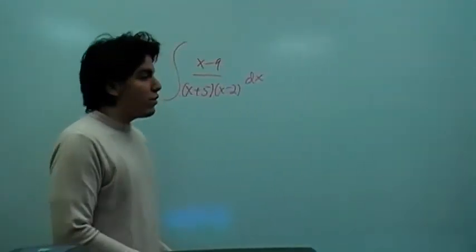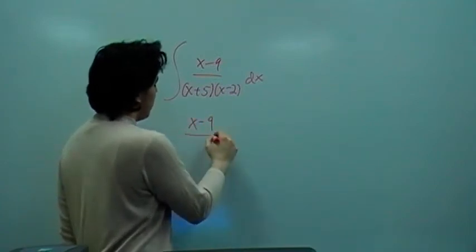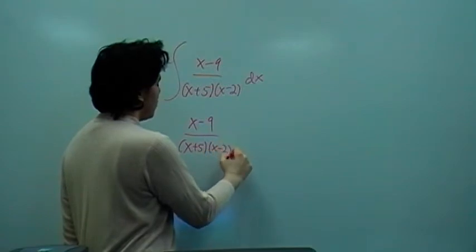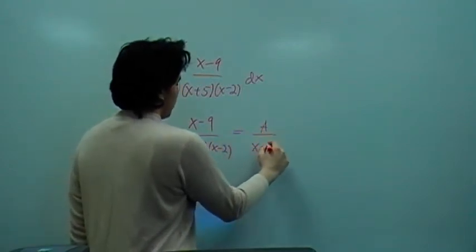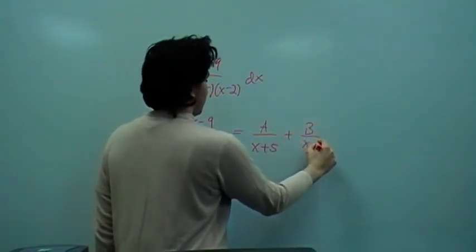Okay, we're going to rewrite this integral here as an equation. x minus 9 over (x plus 5)(x minus 2) is going to be equal to A over (x plus 5) plus B over (x minus 2).